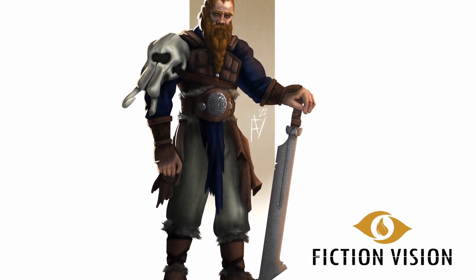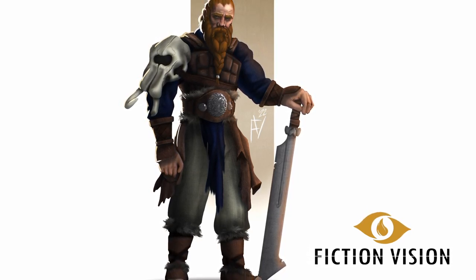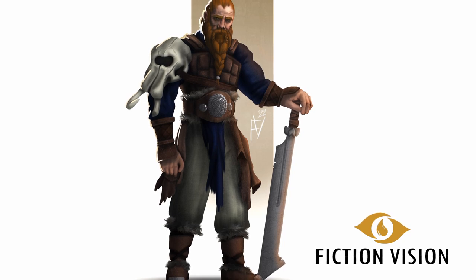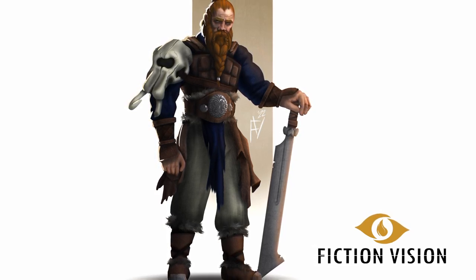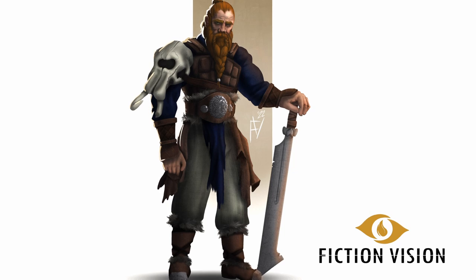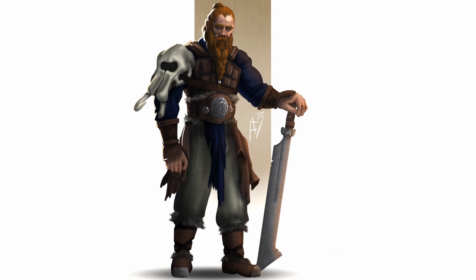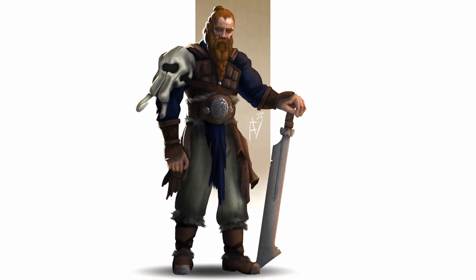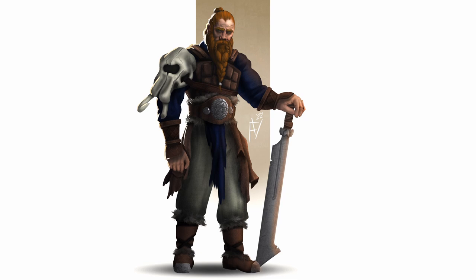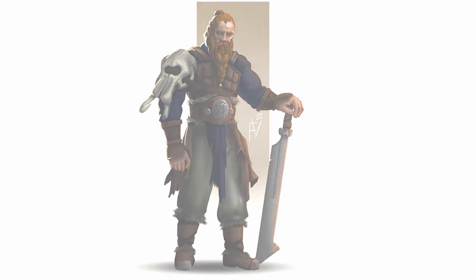Today we're continuing our character design challenge by designing Storr, a big barbarian viking type of character. Storr is Gom's son, who you might remember from the first video. From sketch to render, I think I took some major steps forward in developing a style, and I really noticed progress when placing Storr next to his father for the new banner that the characters in the series will fill. You'll be able to see that at the end of this video, so let's get into it.